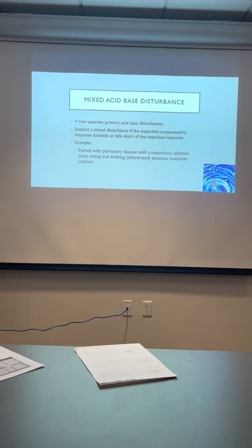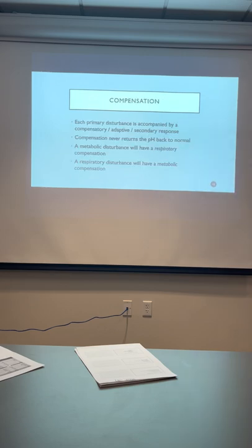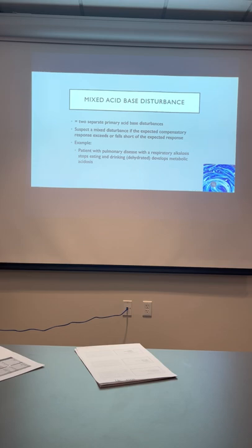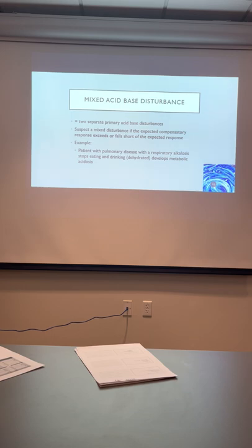There can also be mixed acid-base disturbances. The most important thing to remember about compensation is it will never, ever bring your pH back to normal — it will bring it up or down, but not to 7.4. Mixed acid-base disturbances can have completely normal pHs. For example, a pH of 7.4 with a base excess of minus 20 and a PCO2 of 12 — you'd expect the pH to be abnormal just looking at the base excess, but it isn't. That's when you suspect a mixed acid-base disturbance.